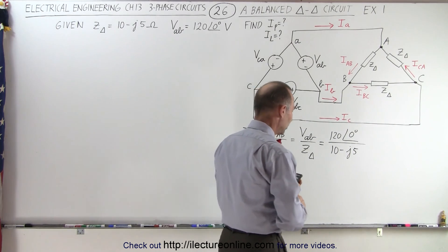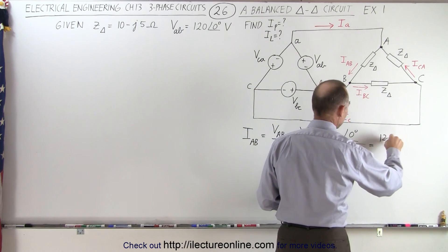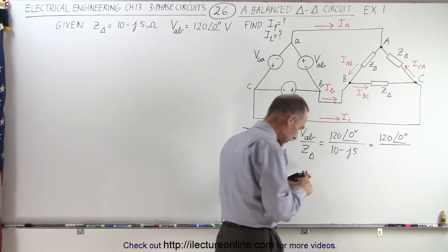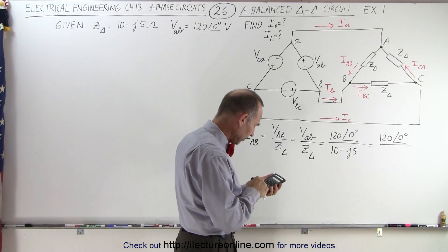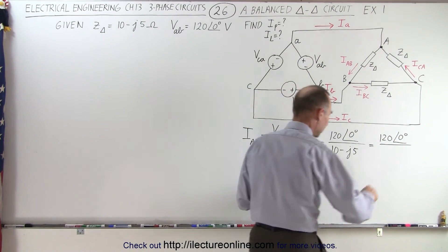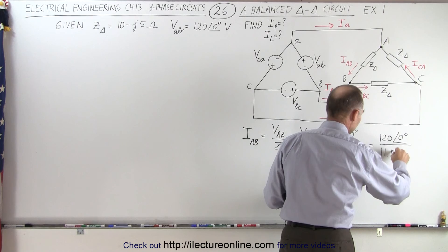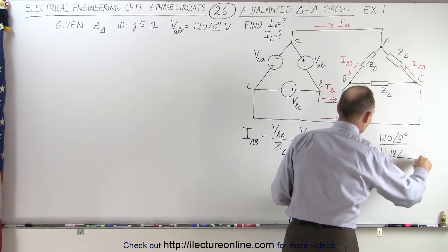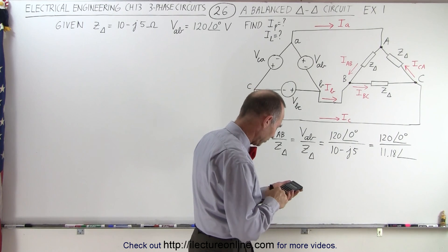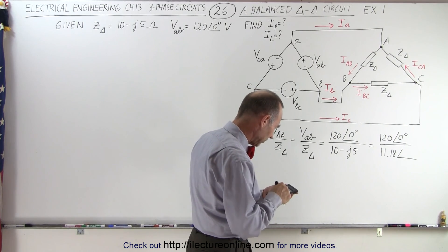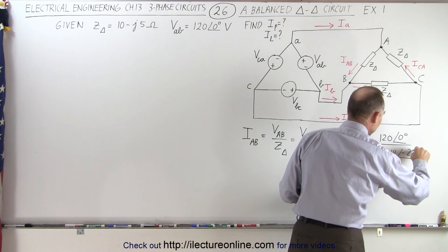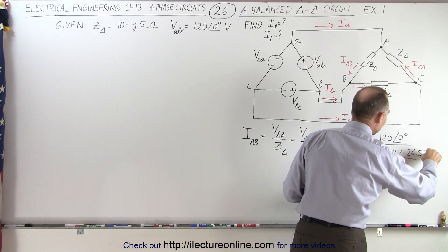Let's rewrite it. So this is equal to 120 at a phase angle of 0 degrees, divided by the impedance magnitude: the square root of 10² plus 5² equals 125, so the square root of that is 11.18 in magnitude, with a phase angle of arctangent of minus 0.5, which is minus 26.57 degrees.